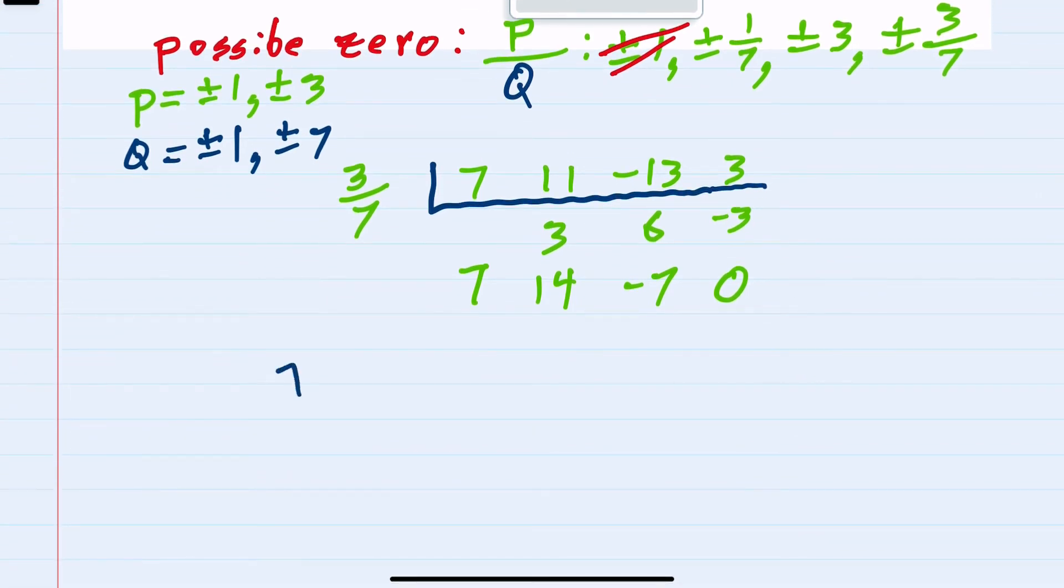And so I can now rewrite it as x minus that zero, so x minus three sevenths, times these are now my coefficients, so this would be seven x squared plus 14x minus seven. And I can get my additional zeros from this new polynomial.